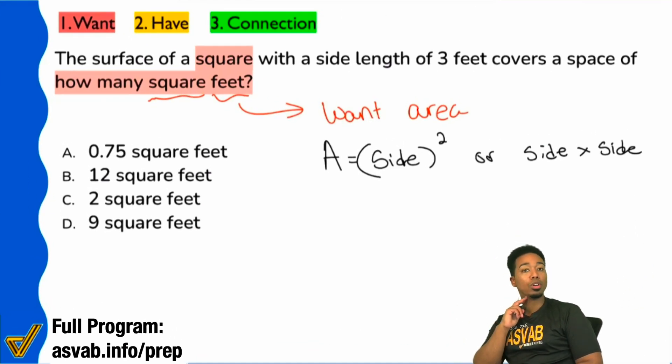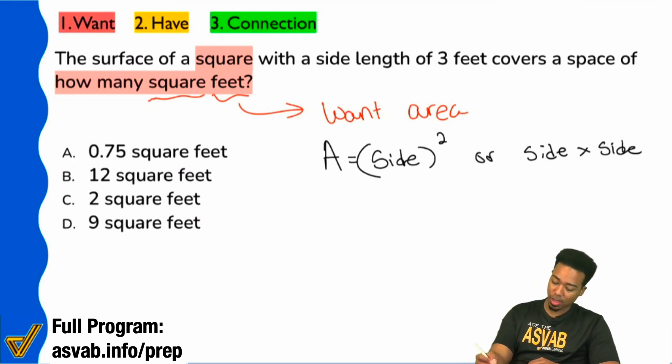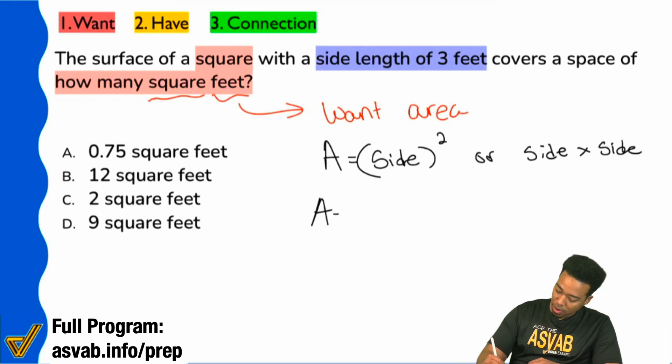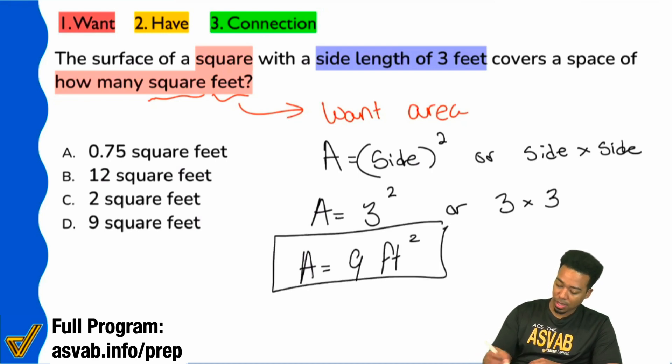So when we go ahead and plug in what we have, we have the side given to us as three. And we can just say right there, side length of three feet. And so we'll go ahead and say that our area equals three squared, which is the same thing as saying three times three. And so three times three is nine. We have nine square feet. And that is the answer here.